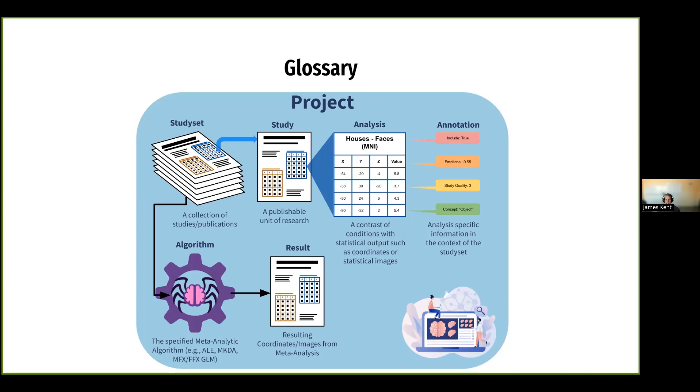And within each study, there is an analysis or multiple analyses. And these analyses represent a contrast of conditions. In this example, we see houses minus faces, so presenting the participants either pictures of houses and comparing that to the condition where they're presenting those images of faces. And we'll see within this table, you have peak coordinates of which brain areas in which those conditions were significantly different from each other. In addition to these tables, one could also have statistical images associated with them, like those that we pulled from NeuroVault.